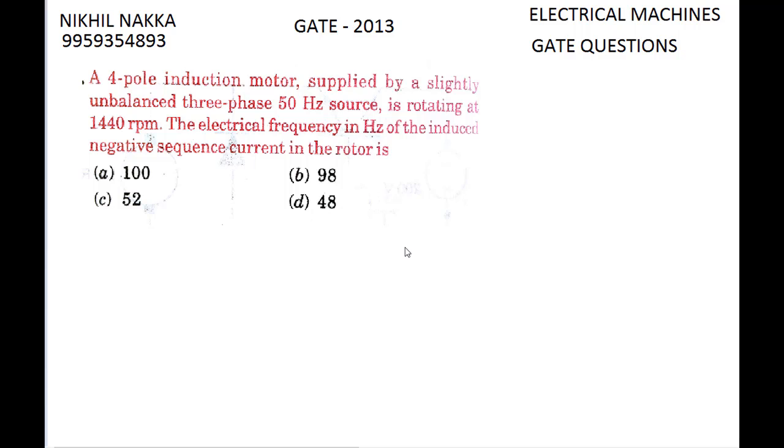The electrical frequency of the induced negative sequence current in the rotor is: option A 100, option B 98, option C 52, option D 48 Hertz.